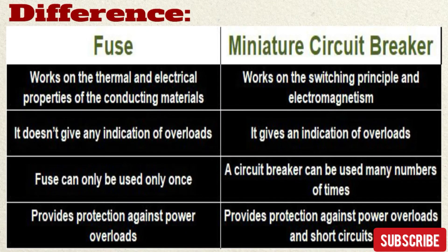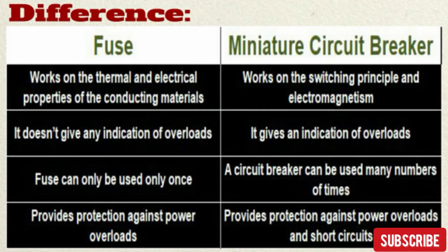Now let's look at some differences between fuse and MCB. First, a fuse works on the thermal and electrical properties of conducting materials, but an MCB works on the switching principle and electromagnetism. Second, a fuse does not give any indication of overloads, but an MCB gives an indication — if any fault occurs in an electrical circuit, the MCB will automatically trip, so you can easily identify which circuit has the problem by checking the panel.